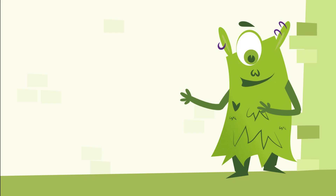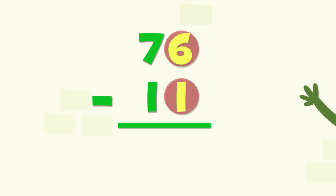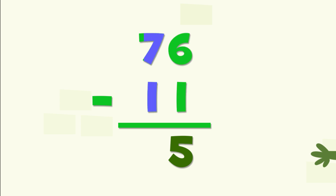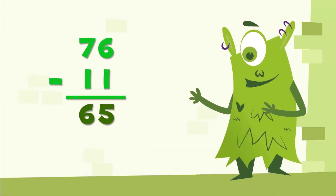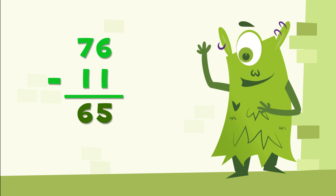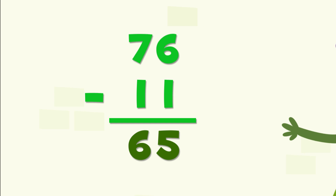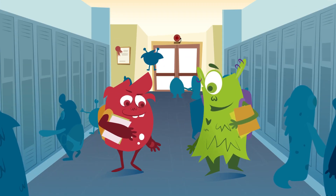To know how many monsters are coming we have to subtract. We can start with the units column: 6 minus 1 is 5. We put the 5 in the units column, and now we move to the tens column and subtract: 7 minus 1 is 6. Done! The total number of monsters coming to the end of the year party is 65. We are going to have such a great time!